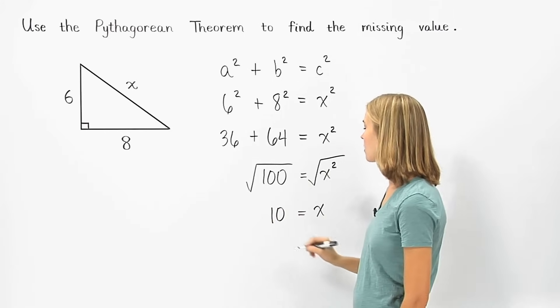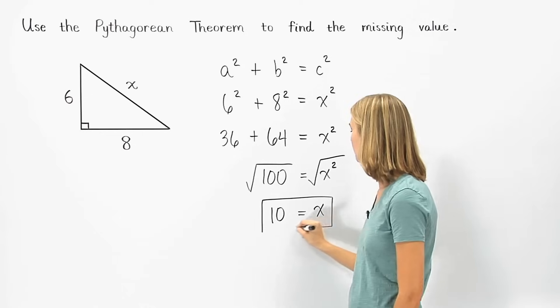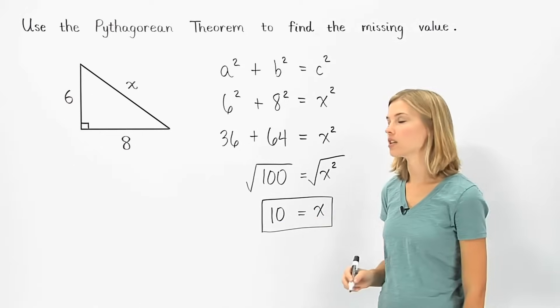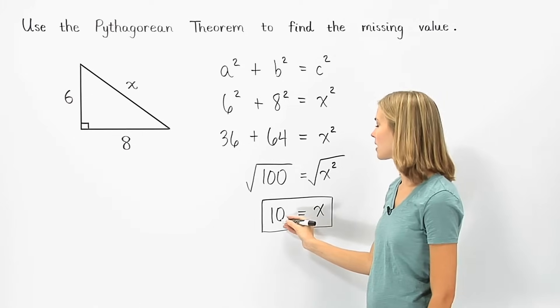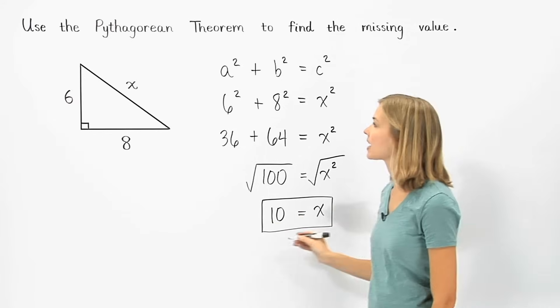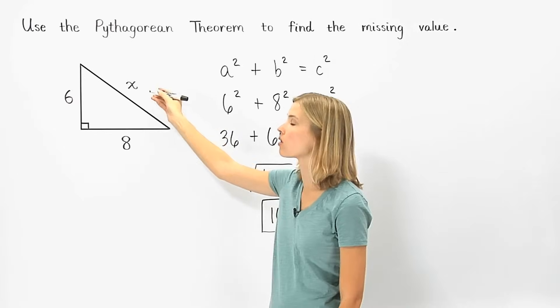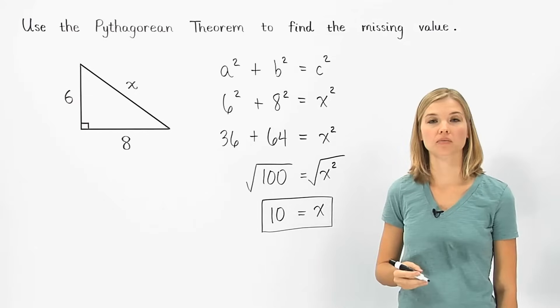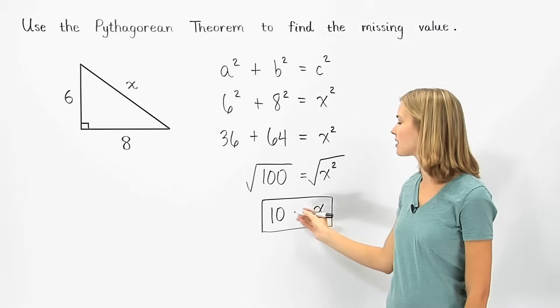So 10 equals x. Notice that we don't use plus or minus 10 because x represents the length of the hypotenuse of the triangle, which cannot be negative. So the value of x is 10.